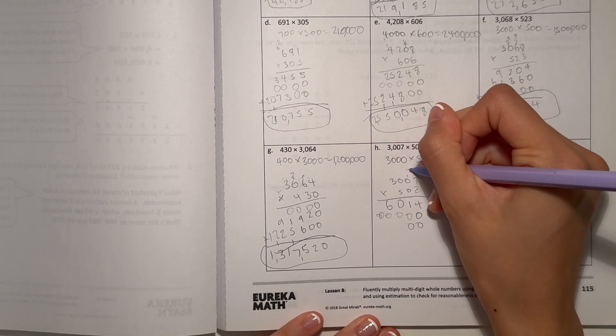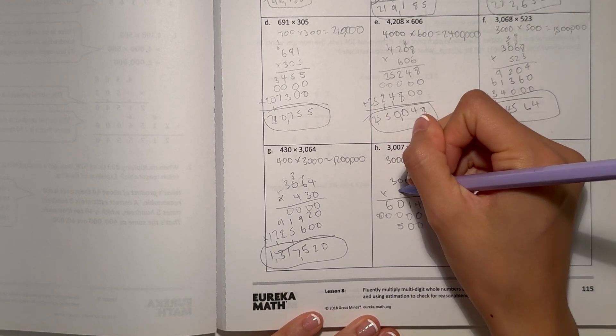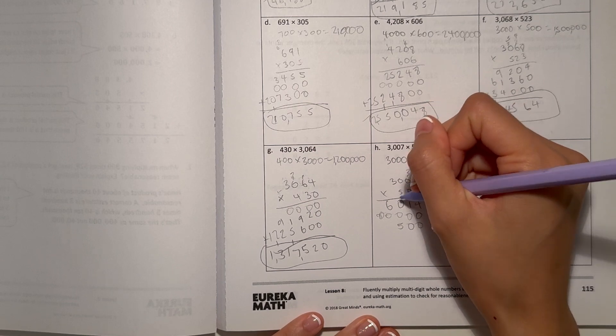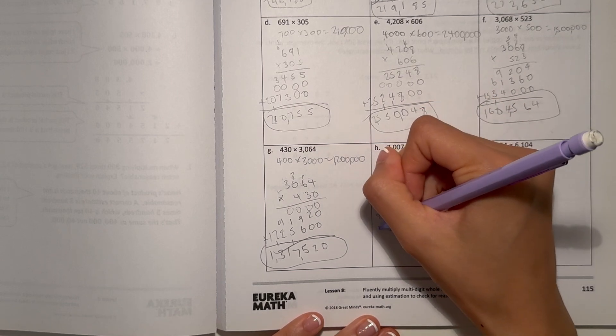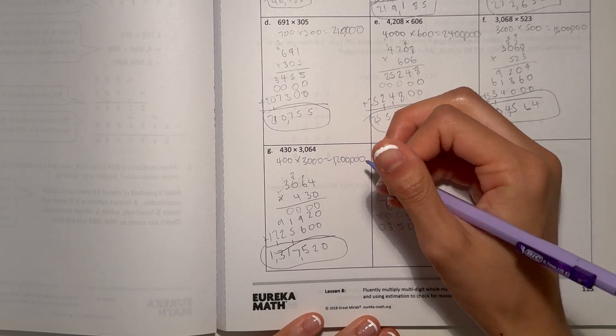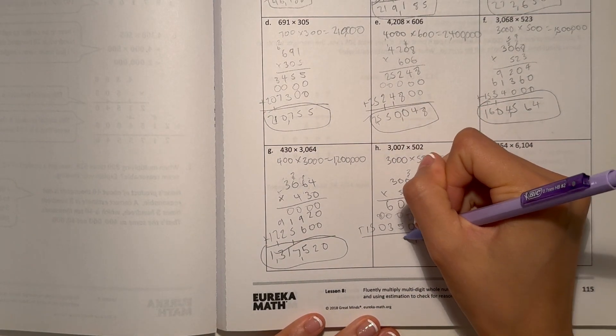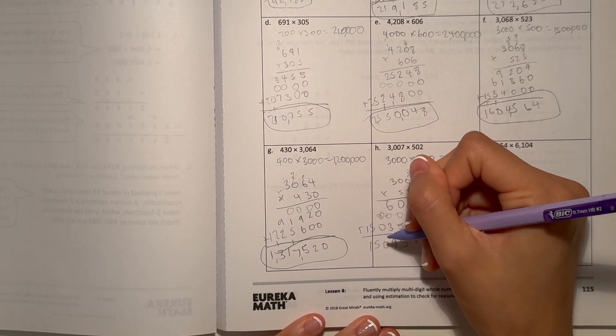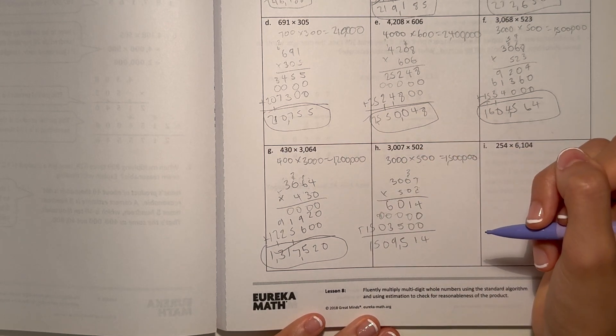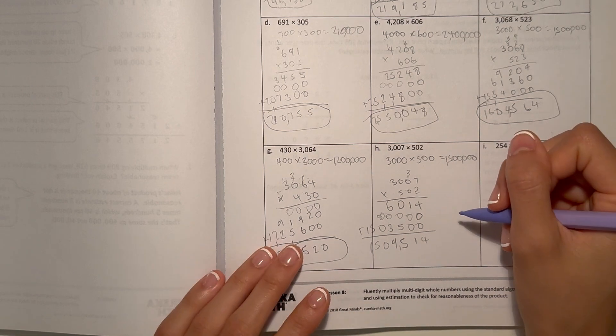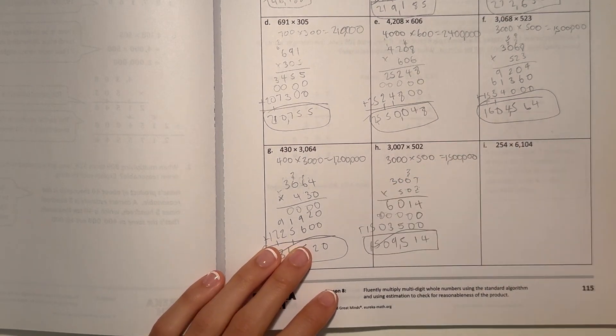Now 0, 0, 5 times 7 is 35. 5 times 0 is 0, plus 3 is 3. 5 times 0 is 0, and 5 times 3 is 15. Let's add. 1,509,514. So our answer is reasonable.